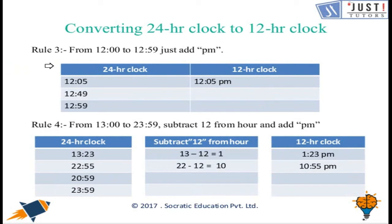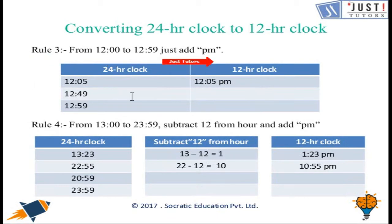Rule number 3: from 12:00 to 12:59, we just add pm. So 12:05 is written as 12:05 pm, and similarly 12:49 pm and 12:59 pm. Rule number 4: from 13:00 to 23:59, we subtract 12 from the hour and add pm.